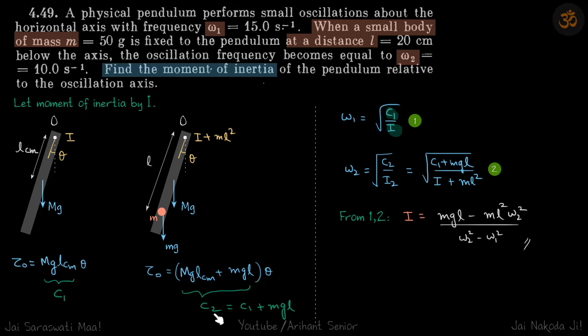So this is c1, this is c2. c2 is simply c1 plus mg l. Now omega 1 is equal to root c1 by i, and omega 2 is c2 by i2. So for this case, i2 is i plus ml square.